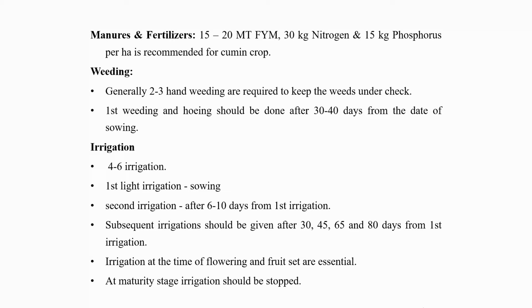Based on type of soil, the crop requires 4 to 6 irrigations. First light irrigation should be given immediately after sowing and second irrigation should be given after 6 to 10 days from first irrigation. Subsequent irrigation should be given after 30, 45, 65 and 80 days from first irrigation. Irrigation at the time of flowering and fruit set is essential. At maturity stage, irrigation should be stopped.